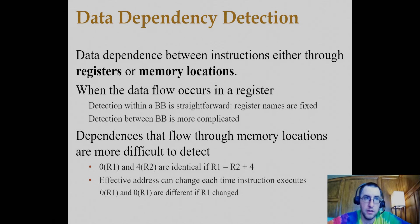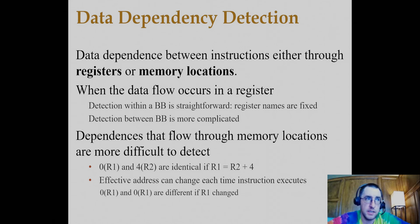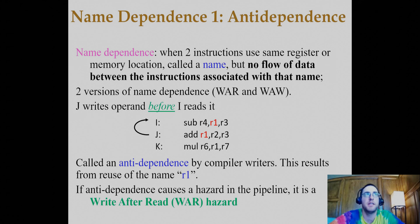Dependencies through memory locations are much more difficult to detect, especially at the compiler level, because two seemingly different memory operands — such as 0 offset from R1 and 4 offset from R2 — can be the same if R1 equals 4 plus R2. This memory aliasing problem causes quite a lot of issues, and we'll revisit it when we discuss data dependencies between memory instructions in different processor designs.